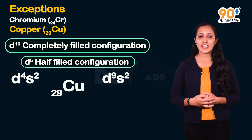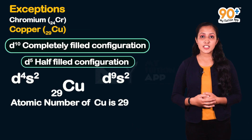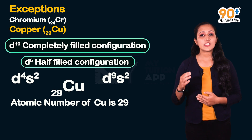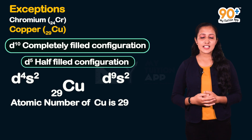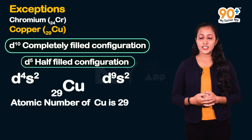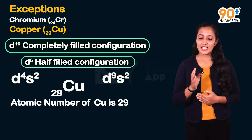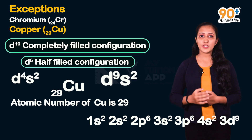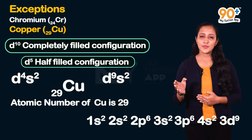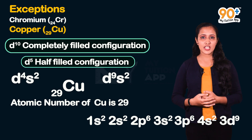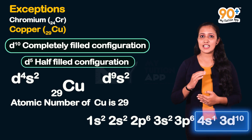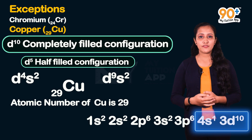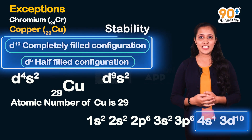For copper (29 electrons), the expected configuration is d⁹s², but one electron from 4s shifts to 3d, giving 4s¹, 3d¹⁰ — a completely filled, more stable configuration.